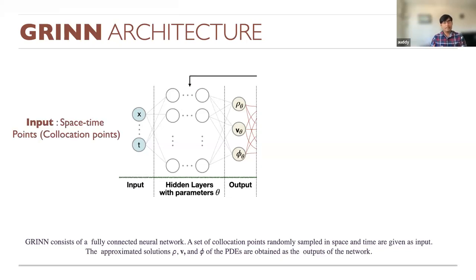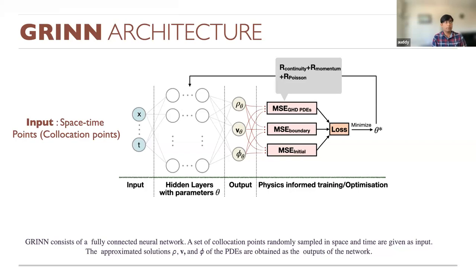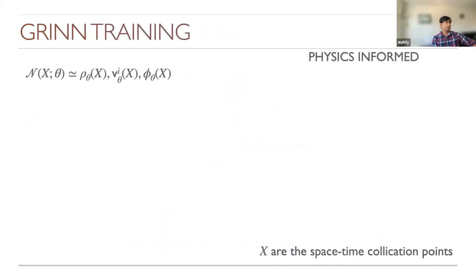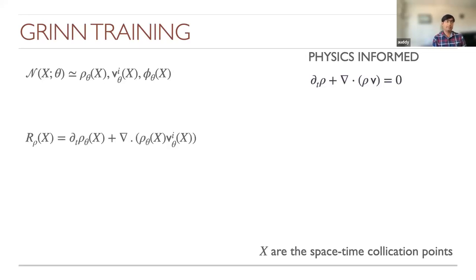Briefly on the GRIN architecture: this is a very vanilla network — three hidden layers with 32 nodes each. The input is just the collocation point space-time domain; the output is density, velocity, and the gravitational potential phi. Using a standard PINNs mechanism, we compute the MSE loss from the PDEs, then we have boundary condition MSE loss, and initial condition MSE loss. The total loss is the sum of the three. We train the system to give solutions for both density, velocity, and phi for all space and time.